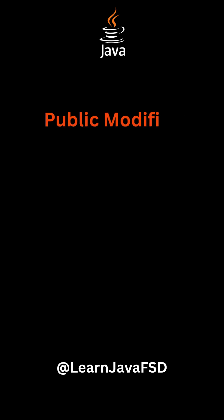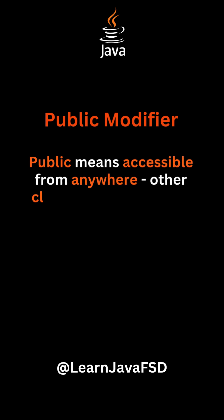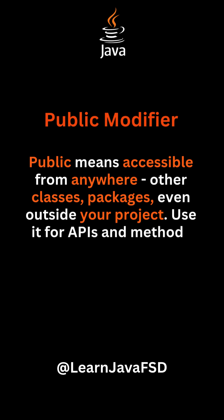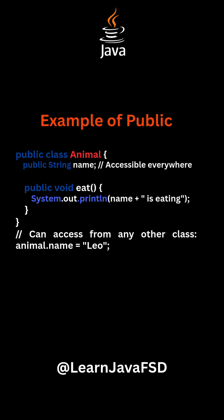Public modifier: public means accessible from anywhere — other classes, packages, even outside your project. Use it for APIs and methods that need wide access. Example of public.